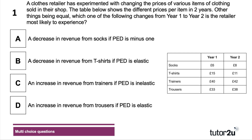The correct answer is C — revenue from trainers will go up. The price of trainers has gone up by £2, and if price elasticity of demand is very low, the company will sell roughly the same quantity of trainers, so revenue will go up.